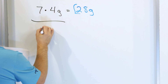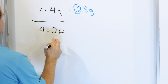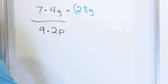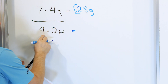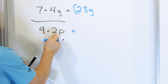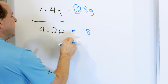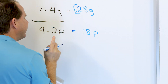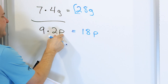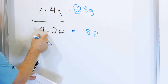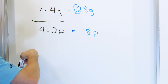What about 9 times 2p? I have numbers to multiply, but I also have this variable. So I multiply the numbers: 9 times 2 is 18, and then the p just comes along for the ride into the answer. This is like having two pennies in my pocket, but then I multiply that amount times 9, so now I have 18 of these pennies.